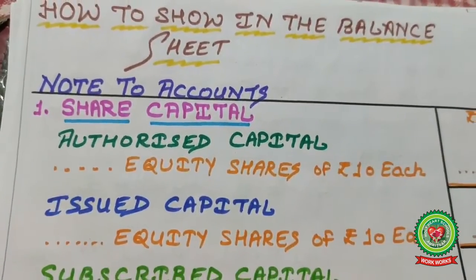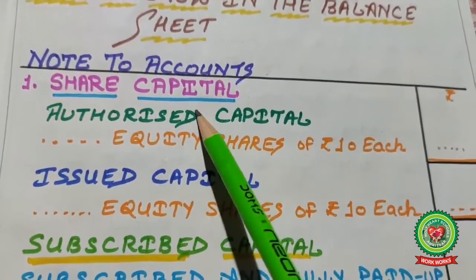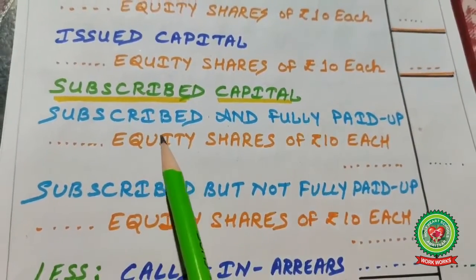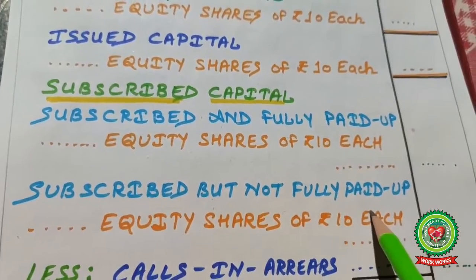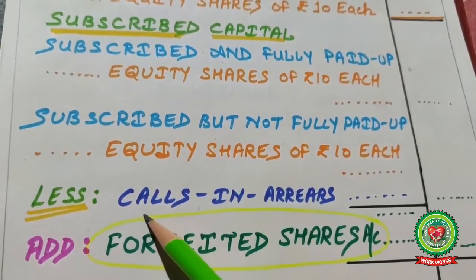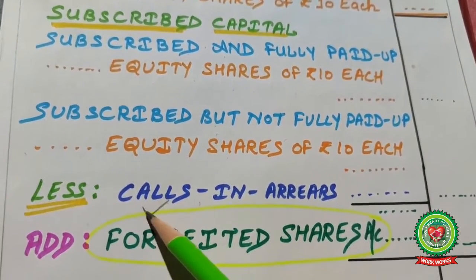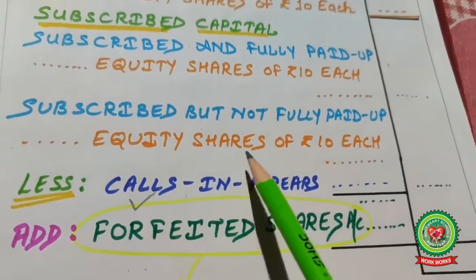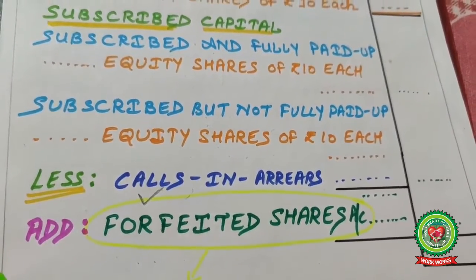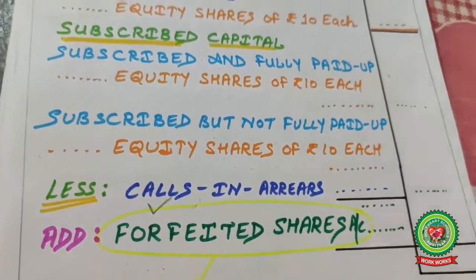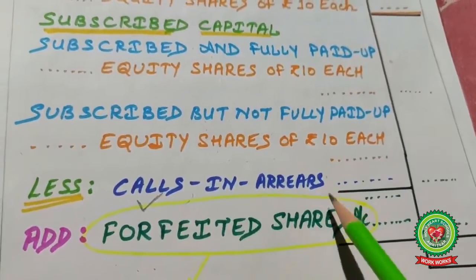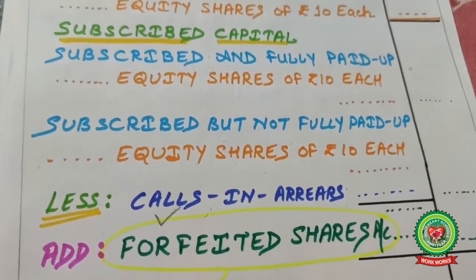How to show in the balance sheet — Notes to Accounts: under Share Capital, the main heads are Authorized Capital, Issued Capital, and Subscribed Capital. Under subscribed capital: Subscribed and fully paid up, and Subscribed but not fully paid up. Under 'subscribed but not fully paid up', deduct Calls in Arrears and add the Forfeited Shares Account balance. In the previous case: Calls in Arrears Rs. 2,000 is deducted and Forfeited Amount Rs. 6,000 is added.